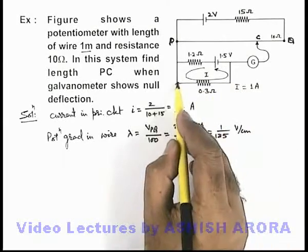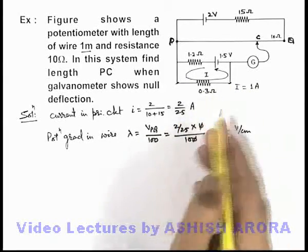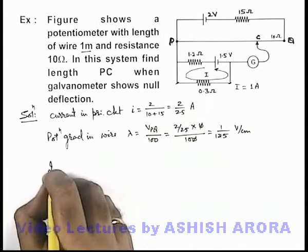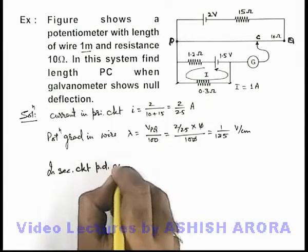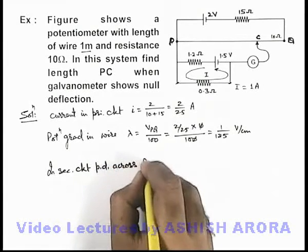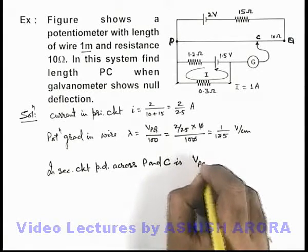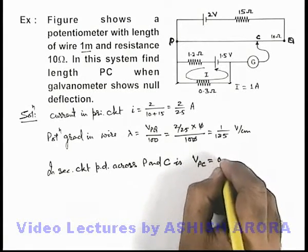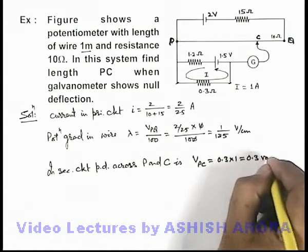And the potential difference across these terminals can be written as 1 multiplied by 0.3. So we can write in secondary circuit, potential difference across points P and C, this Vpc we can write as 0.3 multiplied by 1, this will be 0.3 volt.